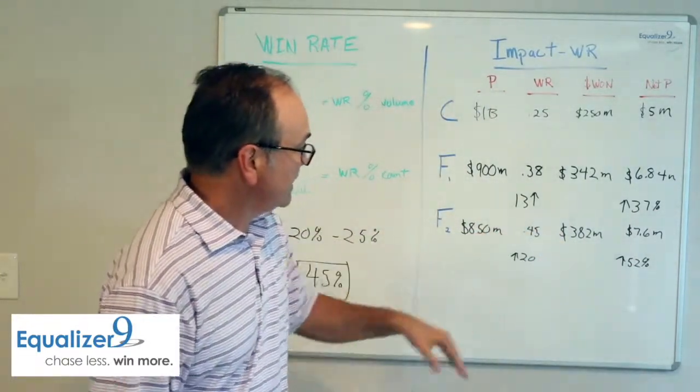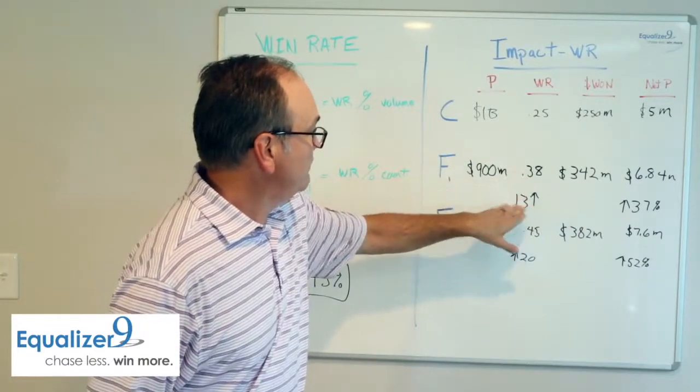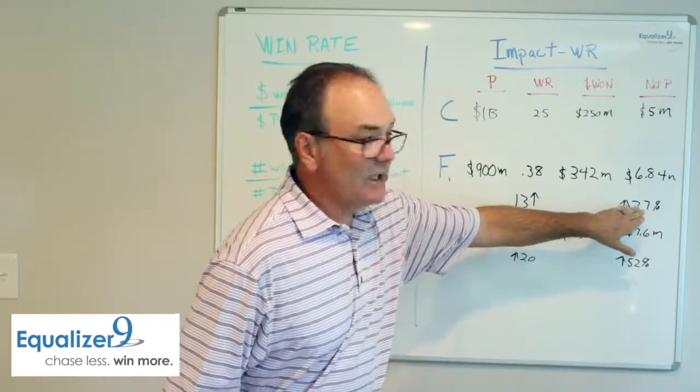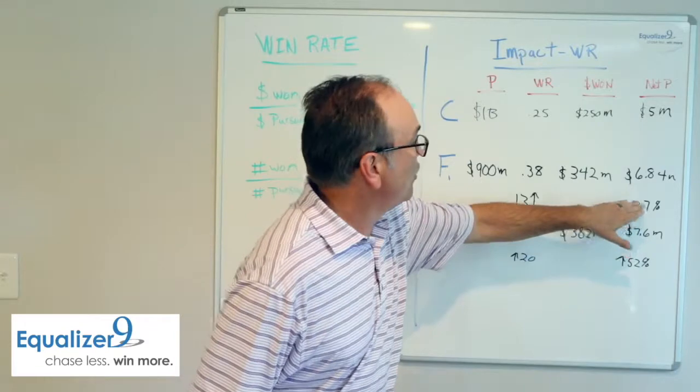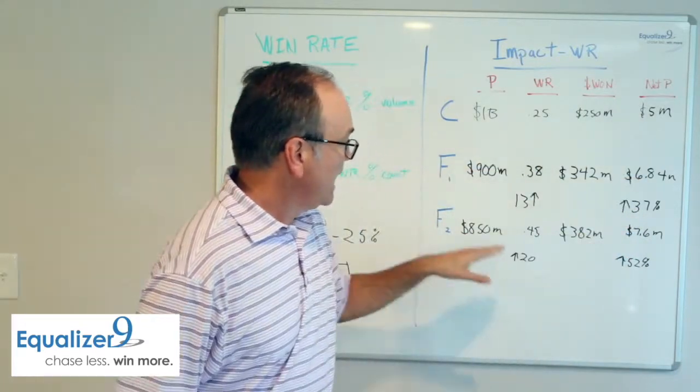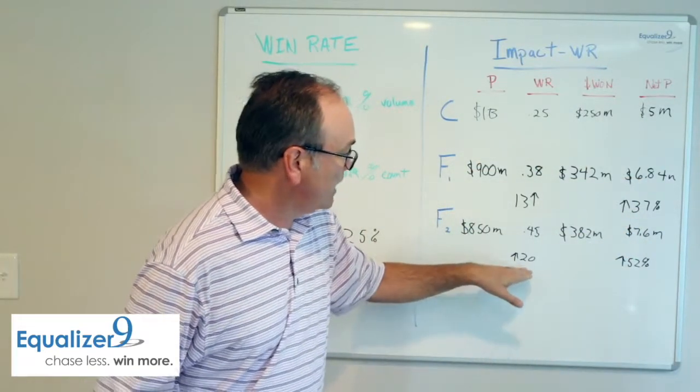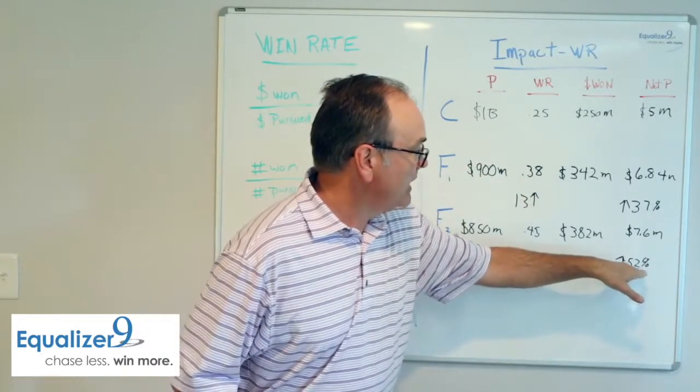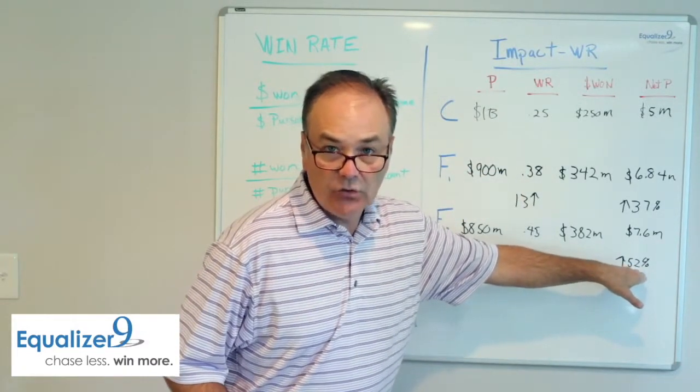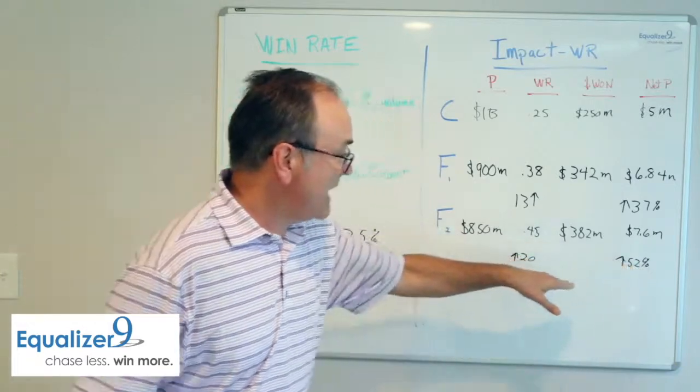So, I like these trends, right? You can start to see, by just manipulating our win rate by 13 basis points, our net profitability went up 37%. And by manipulating it to get up to 20% from where we started, our net profitability went up 52%. That's dramatic.